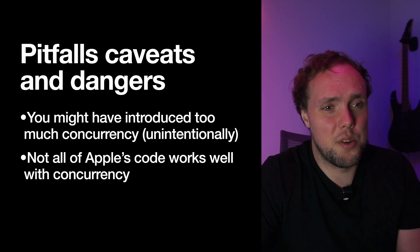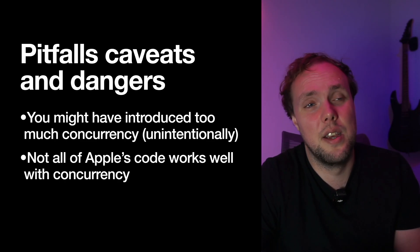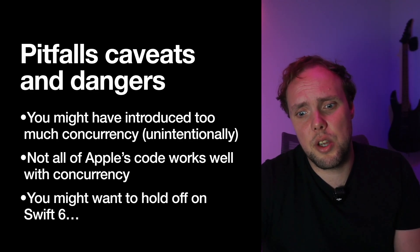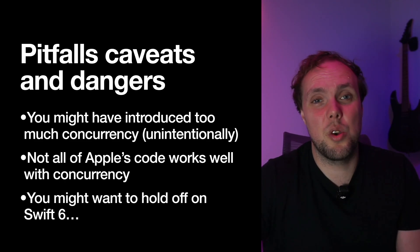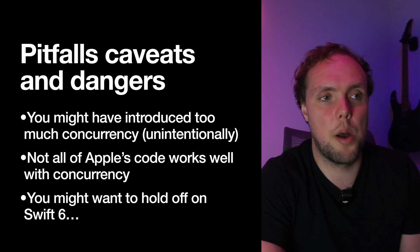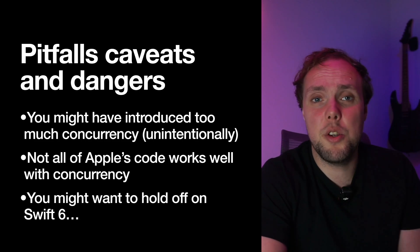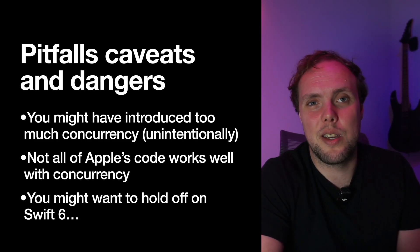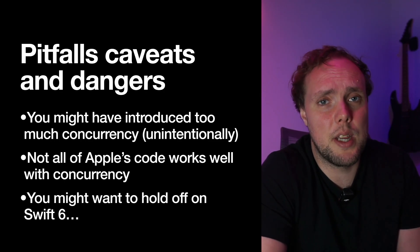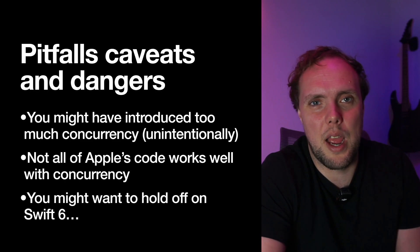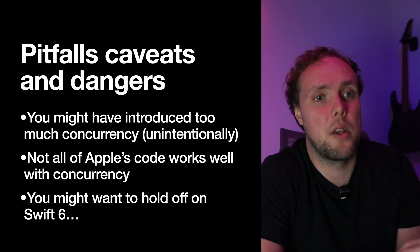When you adopt Swift concurrency, you'll also find that not all of Apple's code works really well with it yet, so you may have to implement some workarounds — there's nothing you can do about it for the time being. Also, you might want to hold off on Swift 6 for a while. Swift 6 is cool and I enjoy working with it, but migrating fully is pretty complicated for a lot of projects. If you're running into a ton of different problems, migrate what you can. If you're modularized, migrate some modules, but maybe your app target isn't ready because it's interacting with Apple frameworks that aren't ready yet. Apple isn't going to take away Swift 5 language mode anytime soon, so we're not in a rush — do what you can but don't jump through hoops.